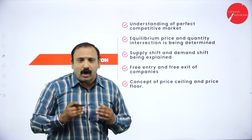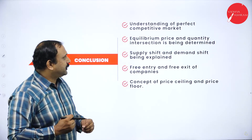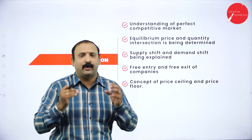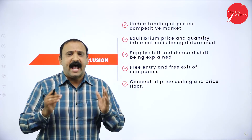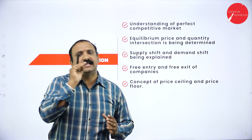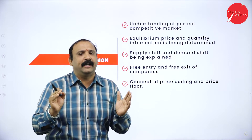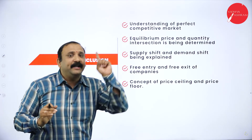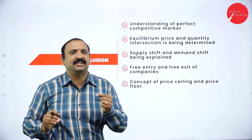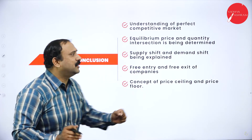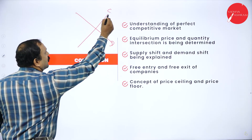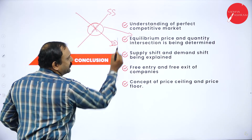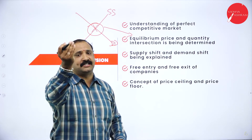The conclusion for this chapter — what did we learn? First, understanding the perfect competitive market: this is a market with equal numbers of buyers and sellers, where there are n number of buyers and n number of sellers, so the market is stable — for every product there is a buyer and a seller. Second, equilibrium price and quantity is determined at the point of intersection. The supply curve and demand curve meet at a particular junction, and that intersection is the equilibrium price.